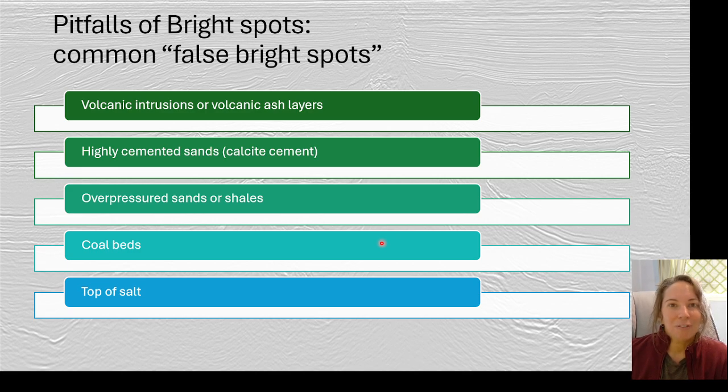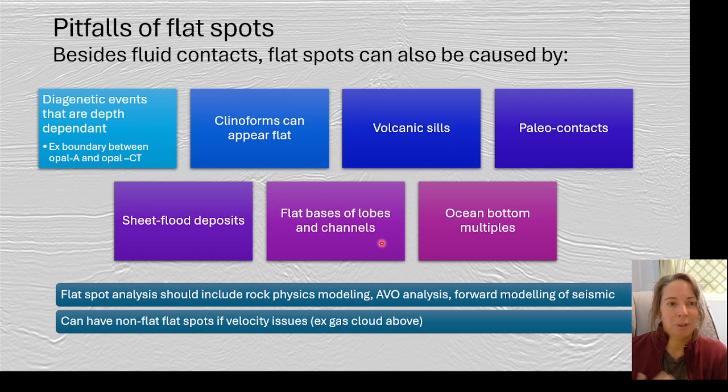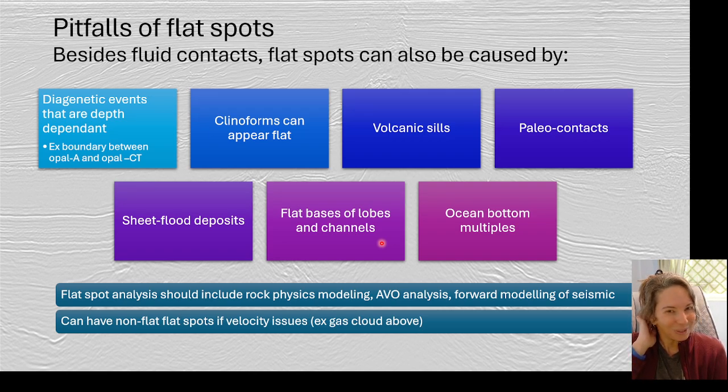There's a lot of pitfalls with bright spots. Some of the common false bright spots that we come across are things with higher velocities, maybe more of the unusual lithologies from volcanic intrusions, highly cemented sands. If you have calcite cement, you could have overpressure sands or shales, coal beds actually work in the opposite way, and then tops of salts. So you want to be aware of those unusual lithologies that may be lurking in your area.